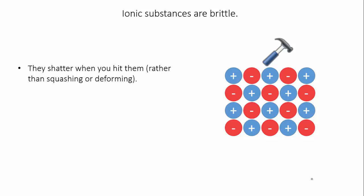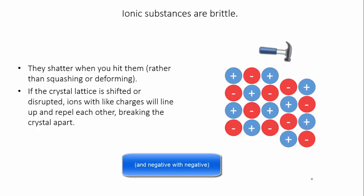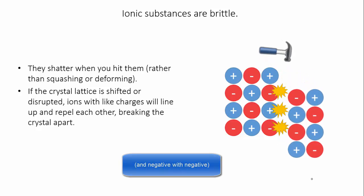Ionic substances are brittle, which means that when you hit them they shatter rather than squashing. This is because if the crystal lattice shifts or is disrupted, positive ions will line up with positive ions which repel each other, and that causes the lattice to break.